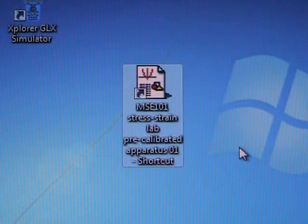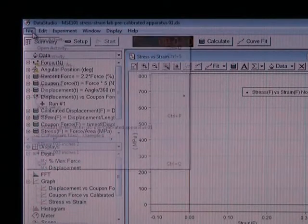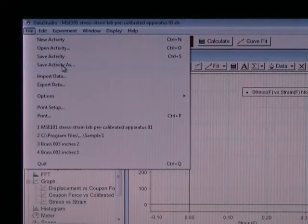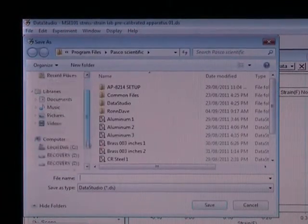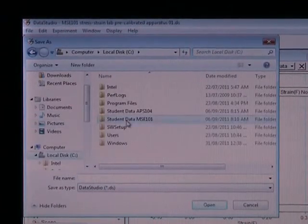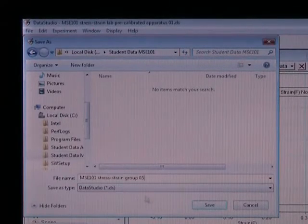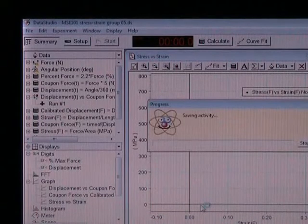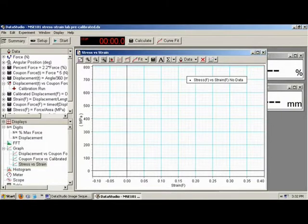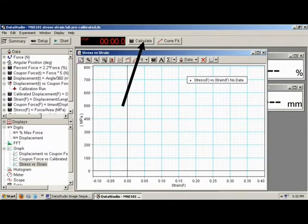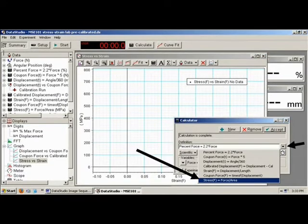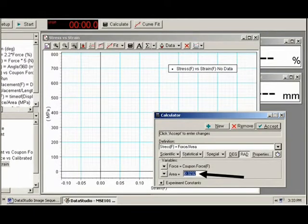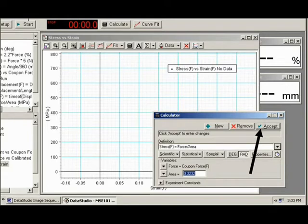Open the file on your desktop called MSC 101 Stress Strain Lab Pre-Calibrated. Immediately save your activity as specified in the Stress Strain Apparatus Instruction Manual. Prepare the stress function by opening the calculator window and selecting Stress equals Force over Area from the drop-down menu. Enter the cross-sectional area of your coupon in square millimeters and click Accept to complete the calculation.